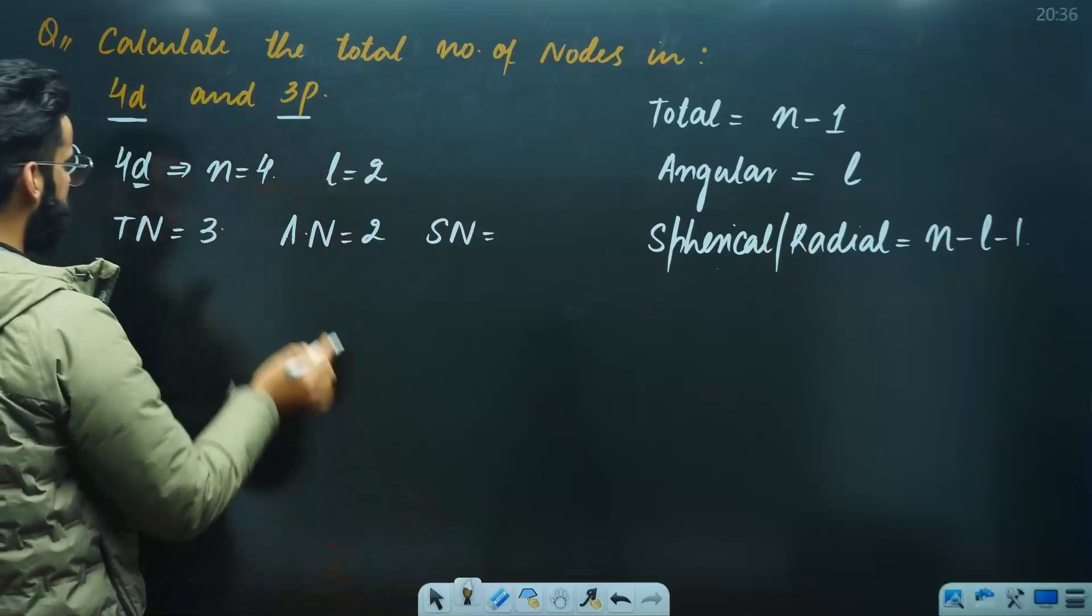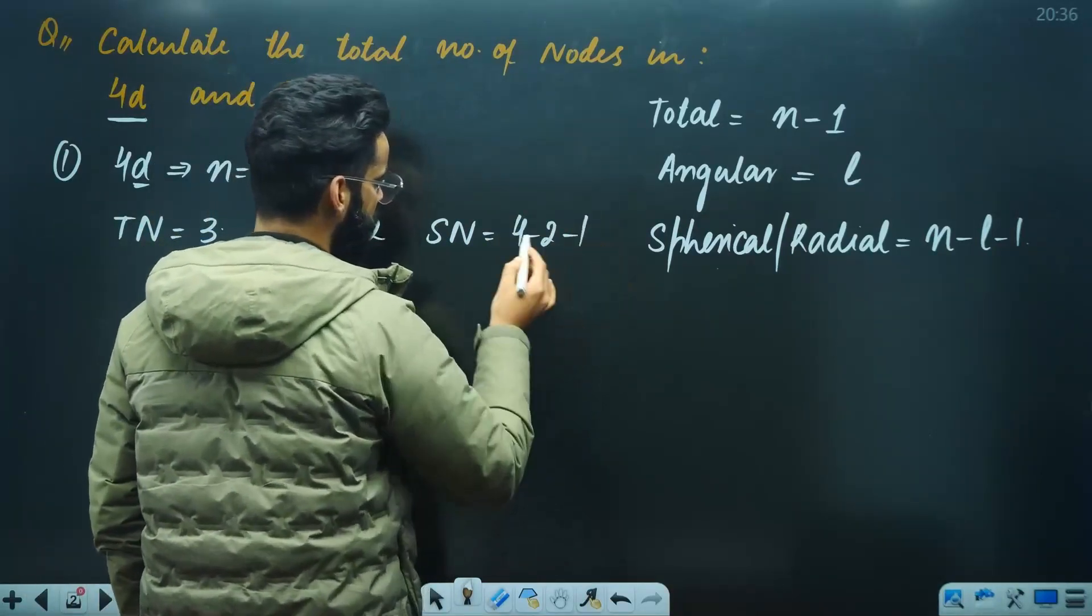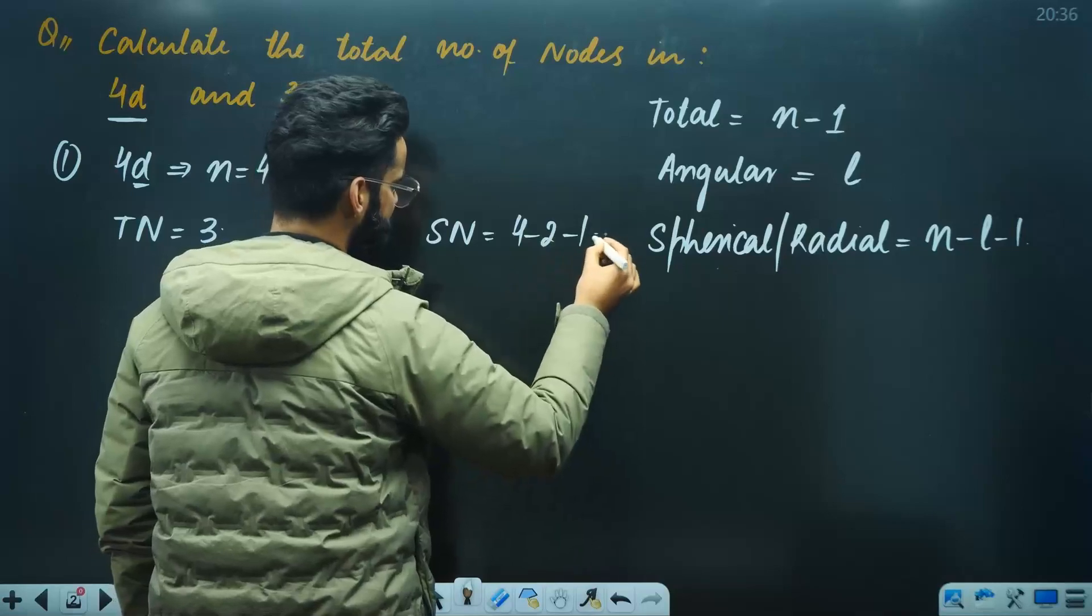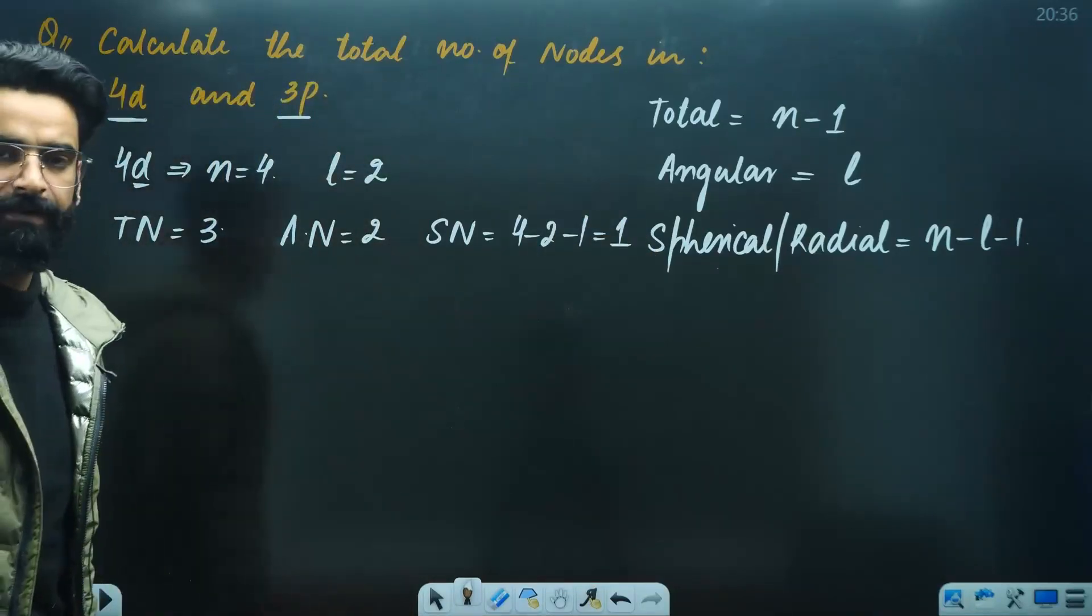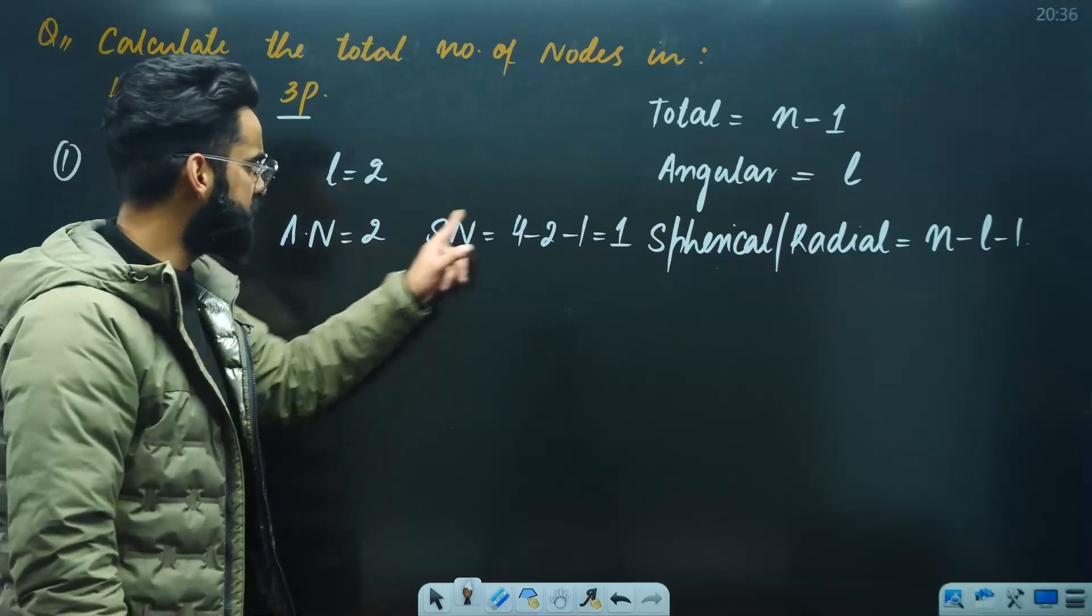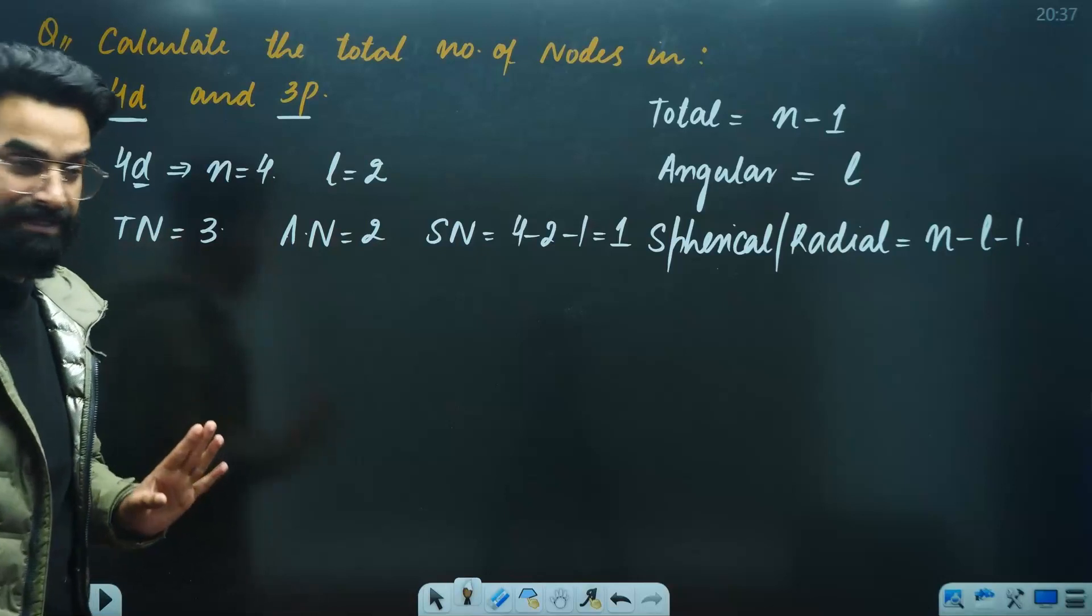If I asked spherical nodes, then n-L-1. N is 4, L is 2, minus 1. So 4-2 is 2, 2-1 is 1. So you've got spherical nodes. Now check - angular nodes plus spherical nodes make total nodes. Check.